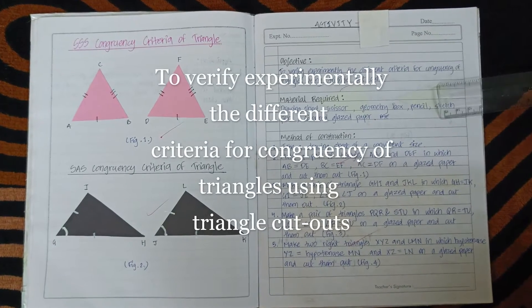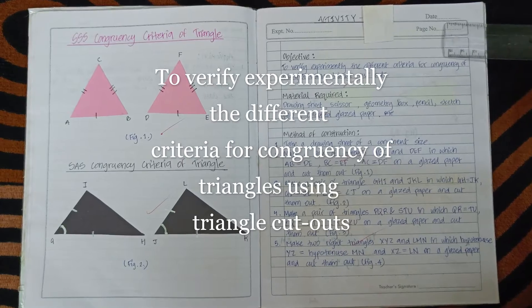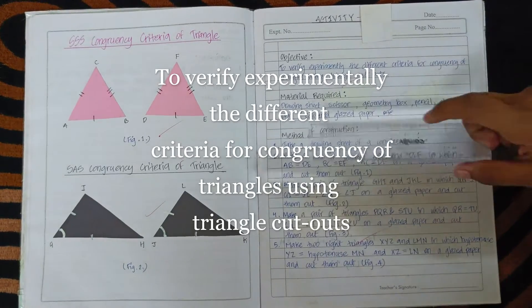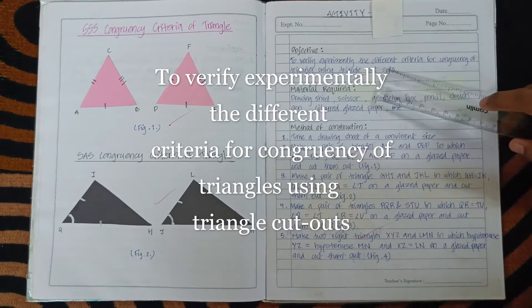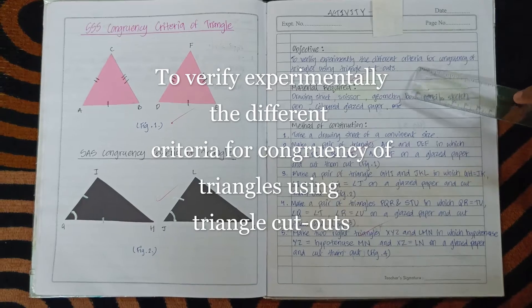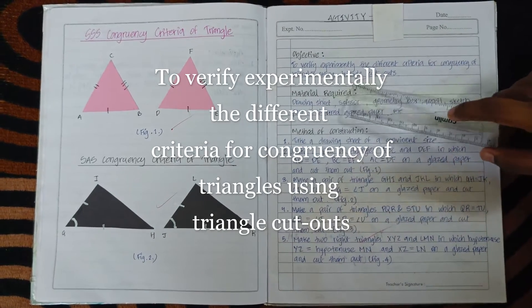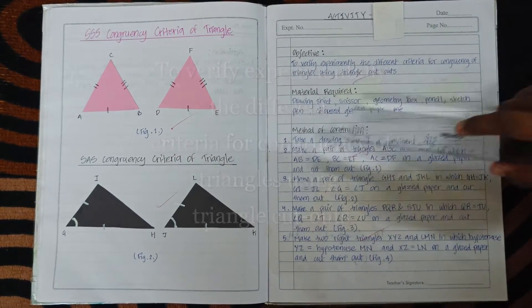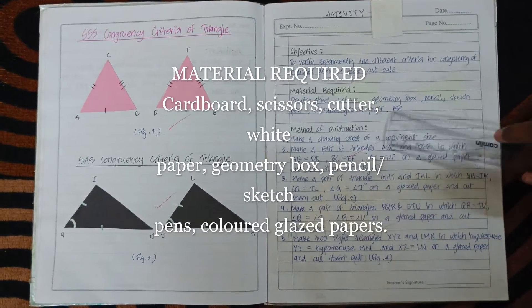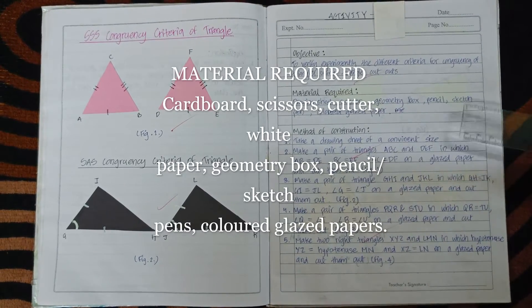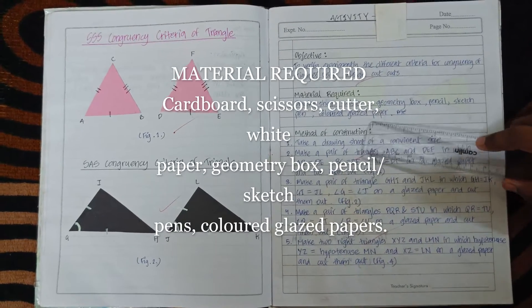Today we will perform an activity of Class 9, which has the objective to verify experimentally the different criteria for congruency of triangles using triangle cutouts. Materials required are drawing sheet, scissor, geometry box, pencil, sketch pen, and colored glazed papers.